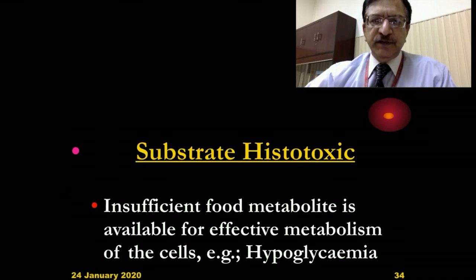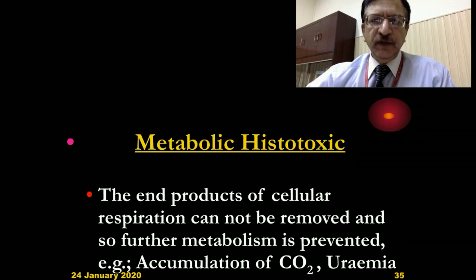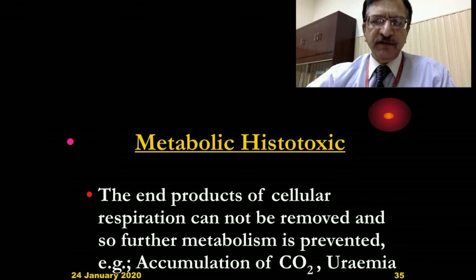Substrate histotoxic hypoxia means there are insufficient metabolites available — since the process of metabolism needs oxygen, glucose, and other ingredients, if they are deficient, like in hypoglycemia where glucose levels are reduced, metabolism is interfered with and hypoxia results. Metabolic histotoxic hypoxia means the end products of cellular metabolism — carbon dioxide, nitrates — are not removed, leading to accumulation of carbon dioxide or uremia. This metabolic accumulation decreases the process of metabolism, hence leading to hypoxia.